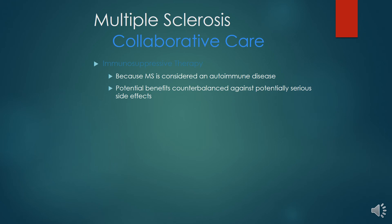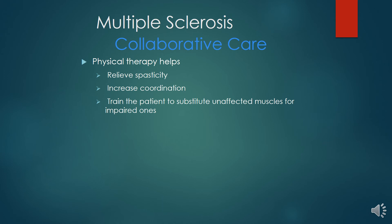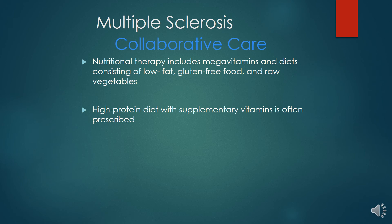Mitoxantrone can be given for worsening relapsing and progressive Multiple Sclerosis. Alternative treatments include cyclophosphamide, IVIG and plasmapheresis. Antispasmodics can be given to ease the patient's suffering. Physical therapies include relieving spasticity, increasing coordination and training the patient to substitute unaffected muscles for impaired ones. It is crucial to include baclofen for spasticity, cholinergics for urinary retention and anticholinergics for urinary incontinence, carbamazepine or amitriptyline for painful paresthesias, and antidepressants for clinical depression. Nutritional therapies include mega vitamins and diets consisting of low-fat, gluten-free food or raw vegetables, with high-protein diet and supplementary vitamins often prescribed.